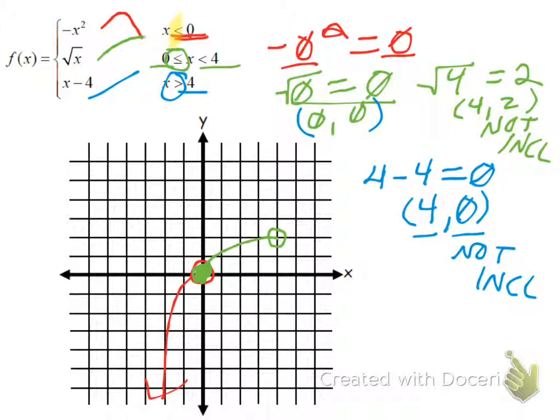So I'm going to go to four, zero and not include that point. And I'm going to continue on graphing a line that follows a slope of one. And that's the shortcut way to graph a piecewise function.